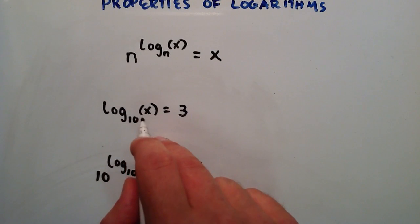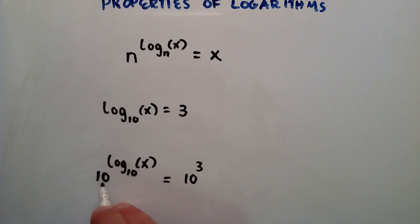well this whole side has to equal 3 for this statement to be true, so then raising this to log base 10 of x is the same thing as raising it to the third power. 10 to the third equals 10 to the third.